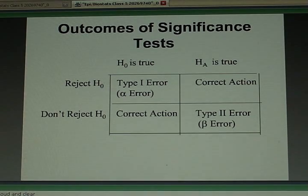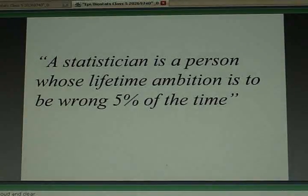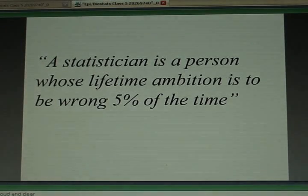So I took this quote from one of my statistics textbooks. A statistician is a person whose lifetime ambition is to be wrong 5% of the time. Not 6% of the time, not 4% of the time, but 5% of the time.